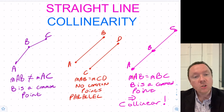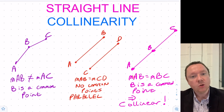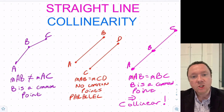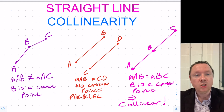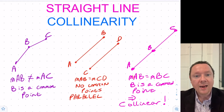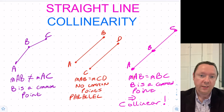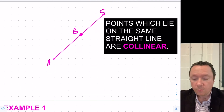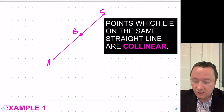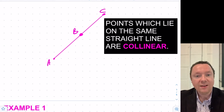So B is a common point. To prove something's collinear, you just check the gradient between two pairs of points, making sure that one point is a common point. If the gradient is the same, they're collinear, and if they're not the same, they're not collinear. Nice and simple. Points which lie on the same straight line are called collinear — that's just a definition.